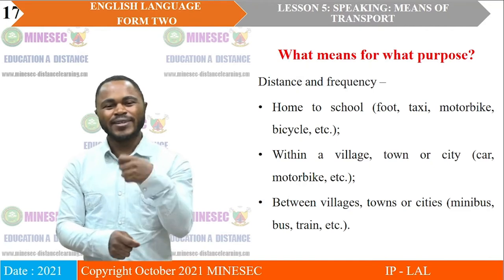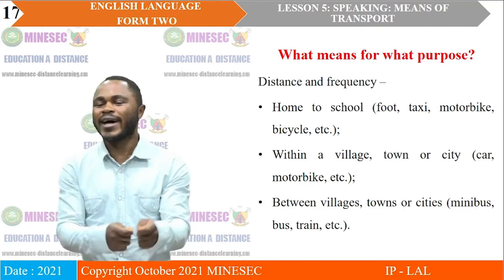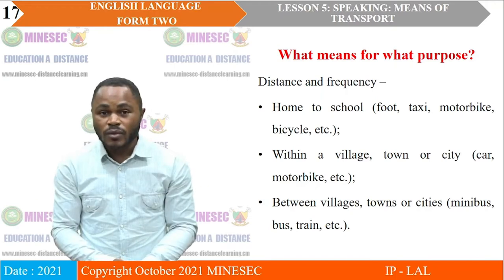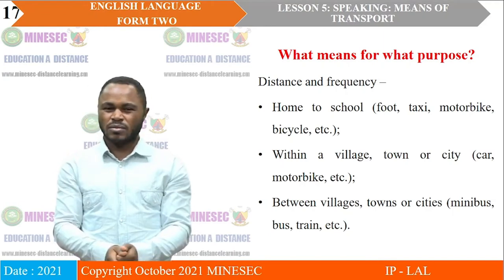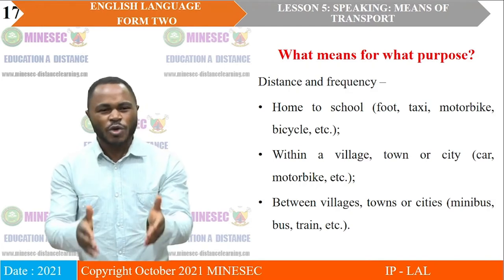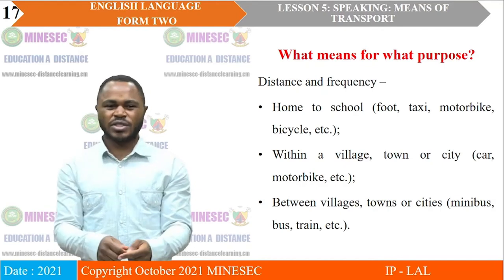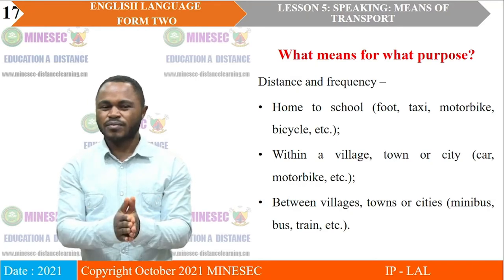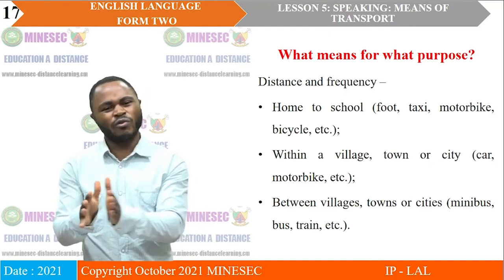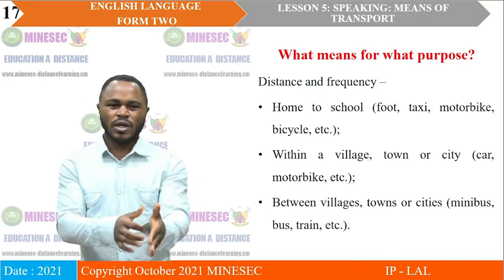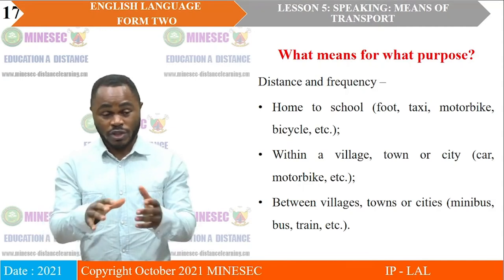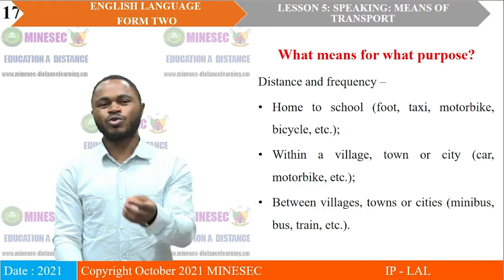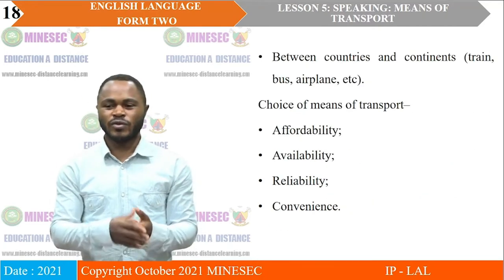What means of transport is appropriate for what purpose? It will depend on the distance and how often we need to cover that distance. If you are going from home to school, depending on how far school is, you may simply go on foot, or opt to use a taxi, a motorbike, or even a bicycle. If you are moving within a village, town, or city, you may use a car, a motorbike, or in some cases a bus. When moving between villages, towns, or cities, it is more common to use a minibus, an omnibus, or a bus — noting that 'bus' is a short form of omnibus — or you may use a train in some cases.